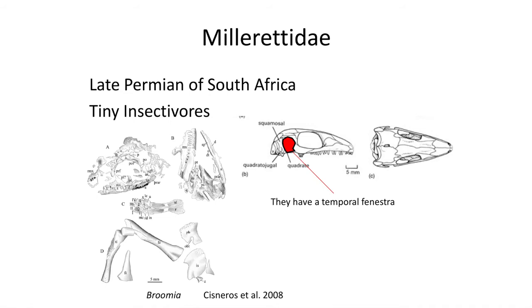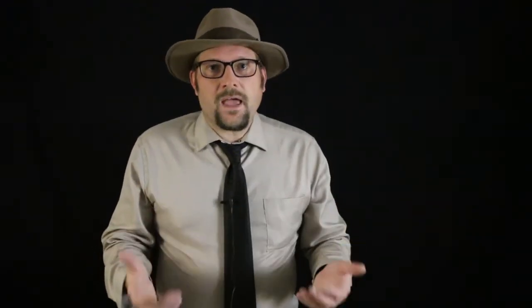The next group are the Millerettidae, a group of tiny early reptiles from the Permian of South Africa. They include the tiny lizard-like reptile Brumia. Although considered anapsids, the Millerettidae have an open temporal fenestra on the ventral side of the skull which lacks a lower bar. This open temporal fenestra likely served as an attachment point for jaw muscles on the outside edge of the skull, allowing them a stronger bite.